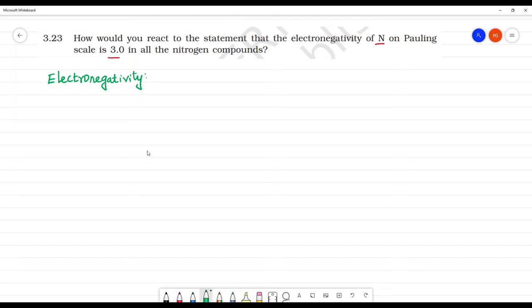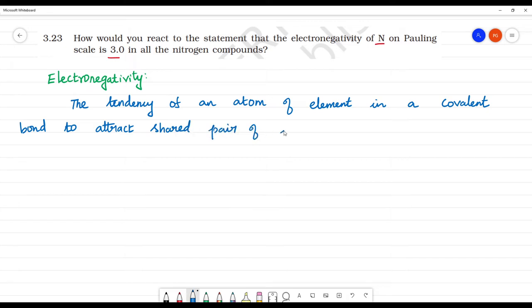What is electronegativity? The tendency of an atom of element in a covalent bond to attract shared pair of electrons towards itself.